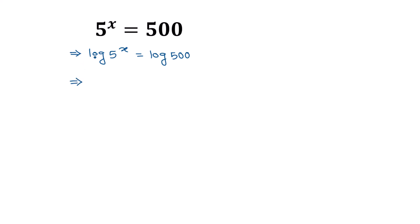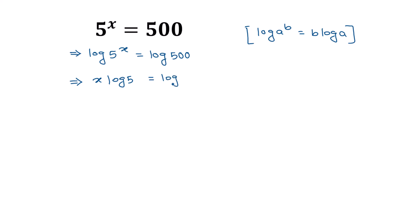Applying the logarithm law — log of a to the power b is equal to b times log of a — we apply this formula to the left side. Log of 5 to the power x can be written as x times log of 5. So x log of 5 is equal to log of 500.